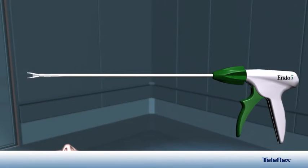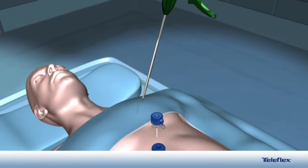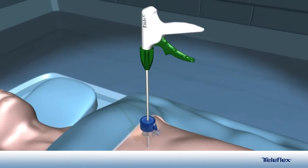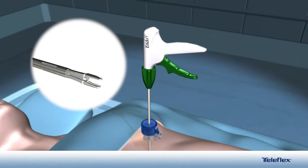A WEK Hemolock Auto Endo 5 mm clip applier is inserted through a 5 mm port. The handle of the applier is squeezed to load a clip into the jaws. A distinctive audible click is heard, indicating the clip is fully loaded.